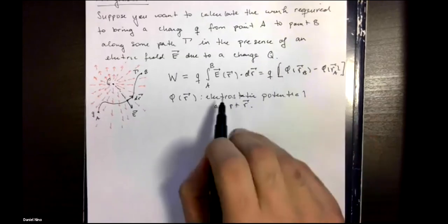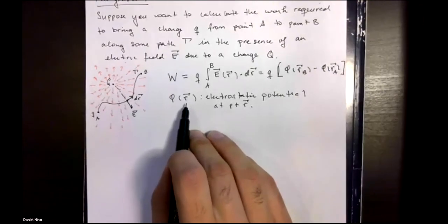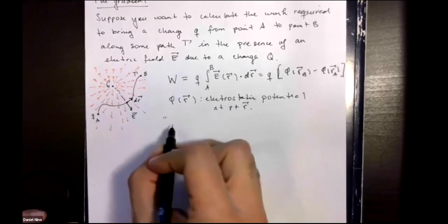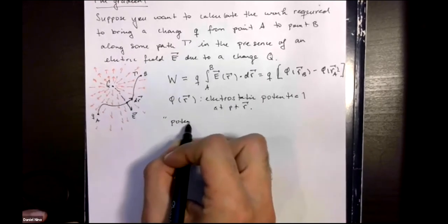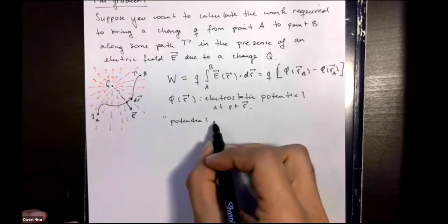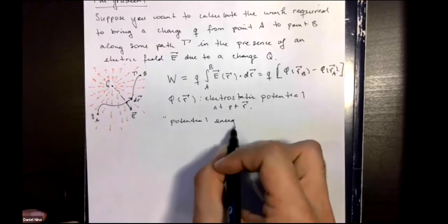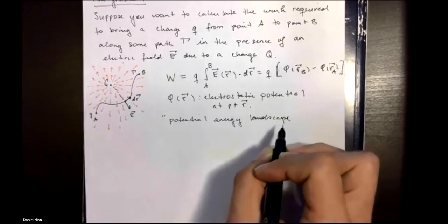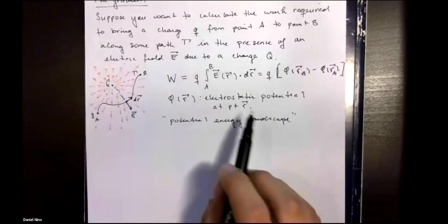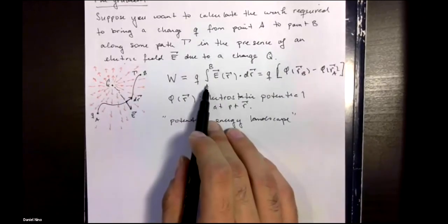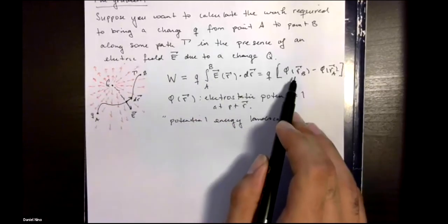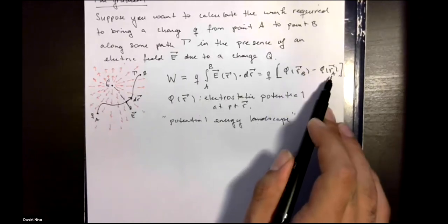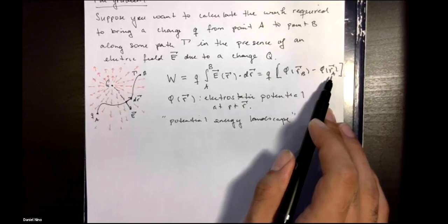Okay, so the way you should think about this electrostatic potential is it describes a sort of potential energy landscape with mountains and valleys and all that. So what you found from electromagnetism was the work needed to take from point A to point B was the difference in the potential energy at point B minus the potential energy at point A.